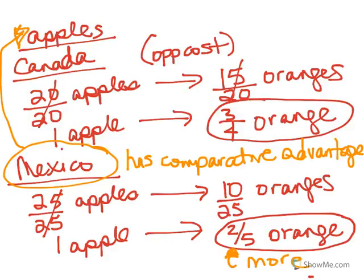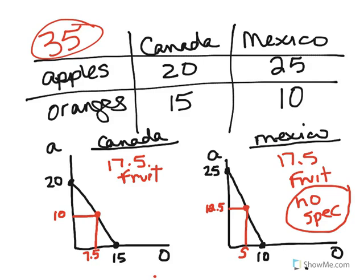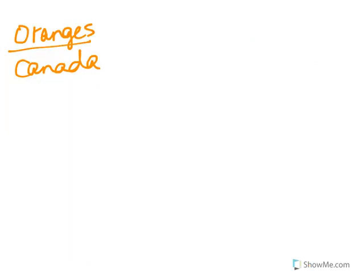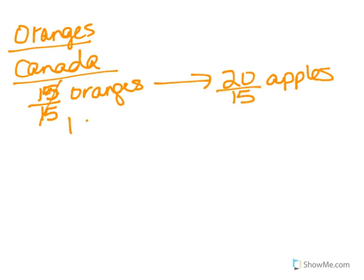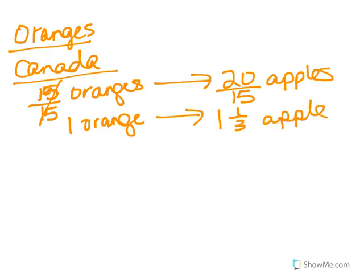Now we calculate the opportunity costs for orange production. For Canada, for every 15 oranges they produce, they give up 20 apples. Dividing both sides by 15, we find that for every one orange Canada produces, they give up one and one-third of an apple. That is their opportunity cost — for every one orange Canada produces, they give up 1⅓ apples.